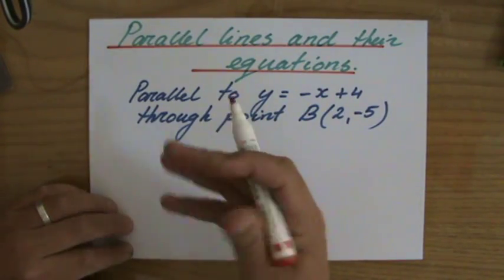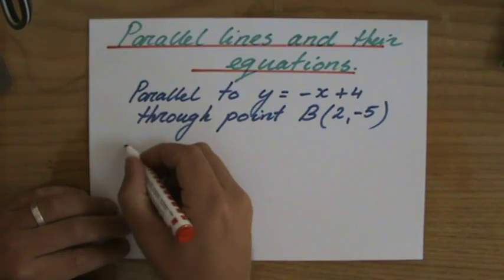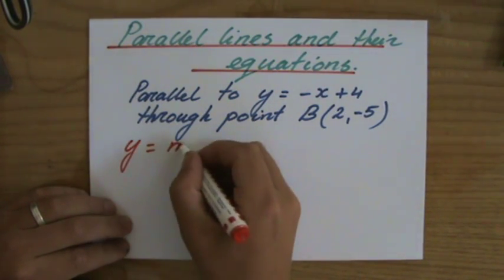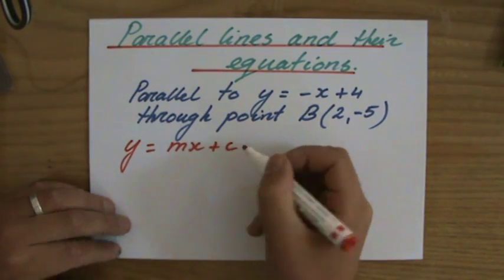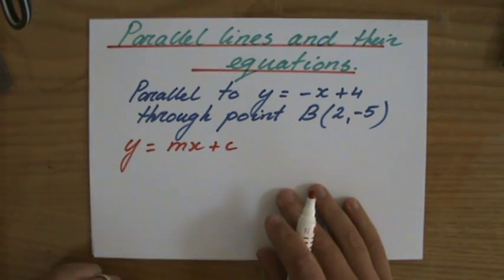Now what do I always do when I have to construct these equations of lines? I write down the general equation y equals mx plus c, which we call the gradient intercept form.